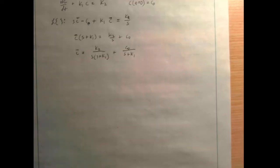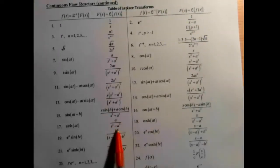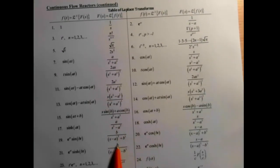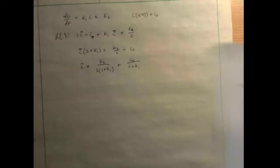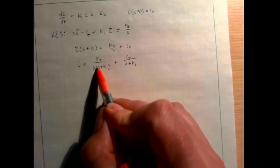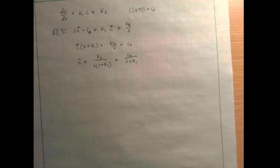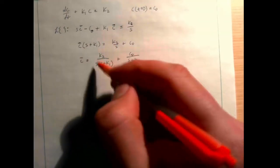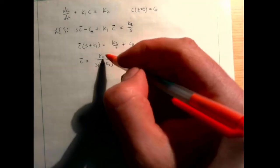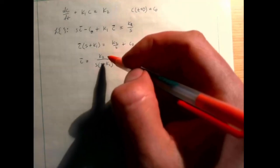The left term K2/[s(s+K1)] is harder. Looking at the table, you can find entries like 1/(s²−a²), but you won't find one that looks exactly like 1 over s times (s plus some other number). That doesn't mean we can't do it — we have to rewrite it in a form we can find. The technique we need is called partial fraction decomposition.